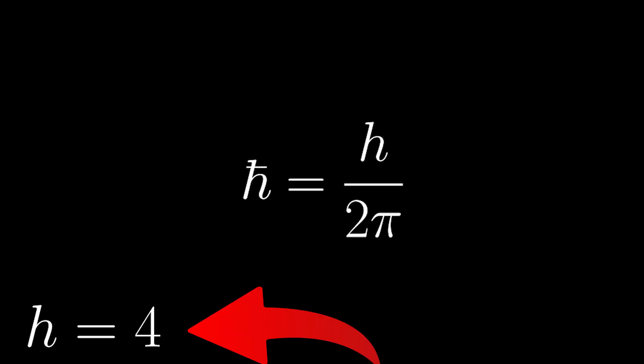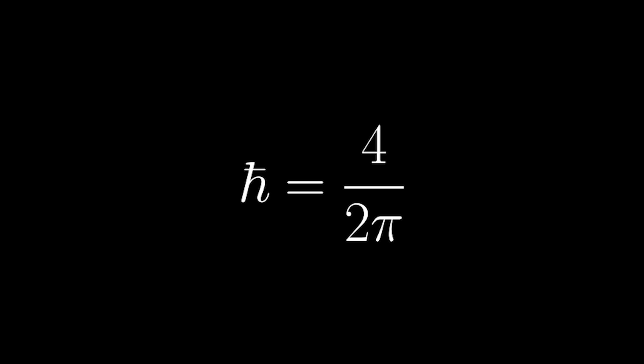However, we also know that h equals 4, so we can plug in 4 for h to obtain that h bar equals 4 over 2 pi, which simplifies to 2 over pi.